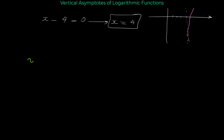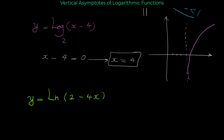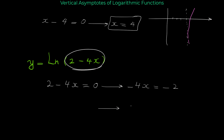Let's do another example. Suppose we have y equals ln of (2 minus 4x). As you probably know, ln is a logarithmic function with base e. So we use the same rule: set the expression equal to zero. From 2 minus 4x equals 0, moving 2 to the other side gives negative 4x equals negative 2, and dividing both sides by negative 4 gives x equals one half.